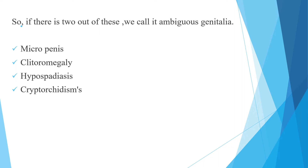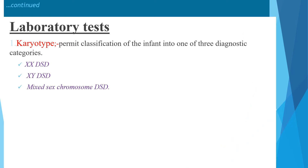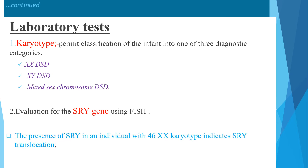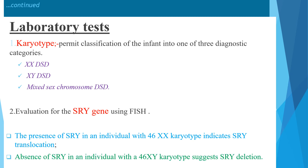We should not assign gender to the baby at this stage. Investigations include karyotype, which permits classification into one of three diagnostic categories: 46XX DSD, 46XY DSD, and mixed sex chromosome DSD. Evaluation for the sex-determining region on the Y chromosome using FISH is needed. Presence of SRY in an individual with 46XX karyotype indicates SRY translocation, whereas absence of SRY in an individual with 46XY karyotype suggests SRY deletion.